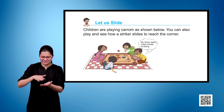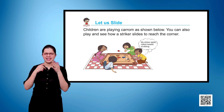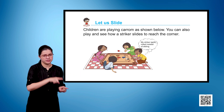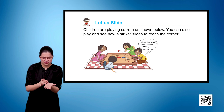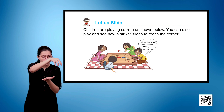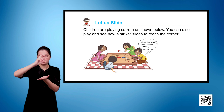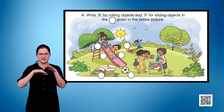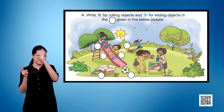Let us slide. Children are playing carom as given below. You can also play and see how a striker slides to reach the corner. 'My striker or goatee rolled instead of sliding.' A. Write R for rolling objects and S for sliding objects in the circles given in the picture.